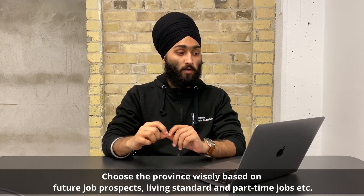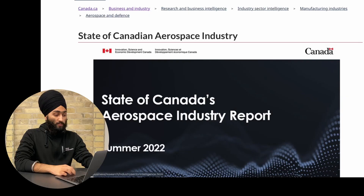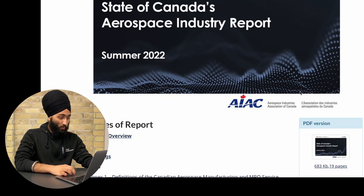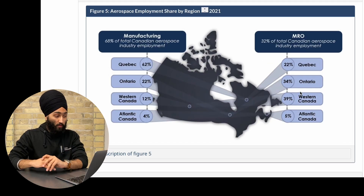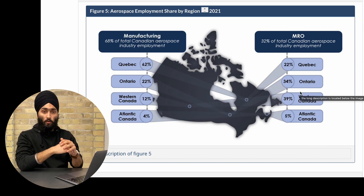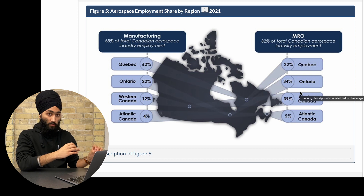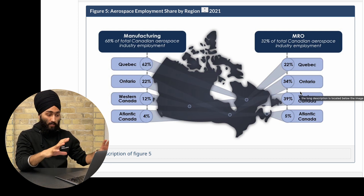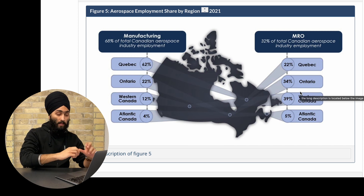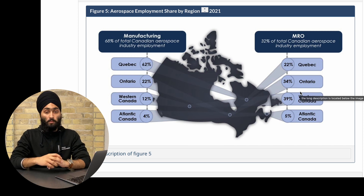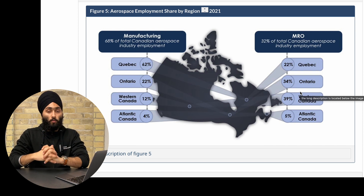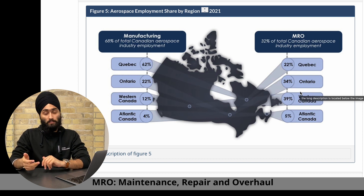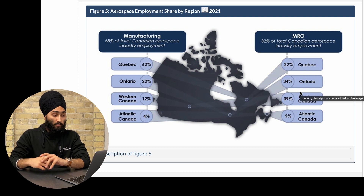I want to draw your attention to the Government of Canada's official website. If you go to the aerospace industry report and look at Figure 4A and Figure 5, these graphs show the scope of aerospace manufacturing and the MRO industry in Canada — specifically what provinces have a good employment share. MRO stands for Maintenance, Repair and Overhaul, which is a very common term used in the industry.